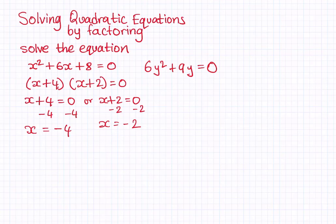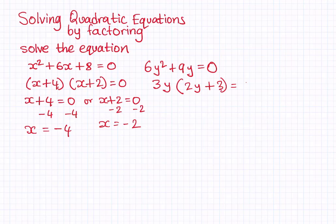Let's look at the second example: 6y squared plus 9y equals 0. This is not in the form ax squared plus bx plus c, so we can go ahead and factorize it directly. The common factor is 3y. Dividing through, we get 3y(2y + 3) = 0.